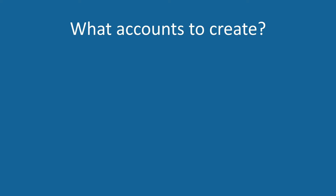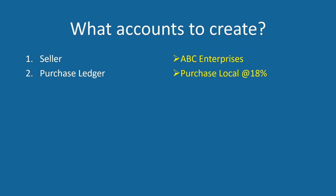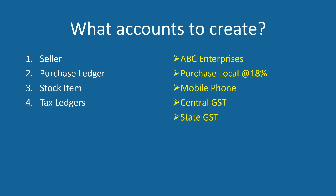Let's see what accounts we have to create. First, we have to create the seller's account, which is ABC Enterprises here. Then the purchase ledger — let's name it as Purchase Local at 18%. Next, the stock item, which is Mobile Phone in our example. Lastly, we have to create two tax ledgers: one is Central GST and the other is State GST.